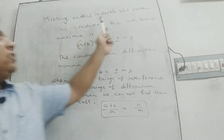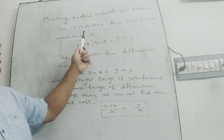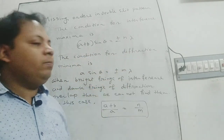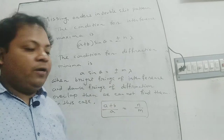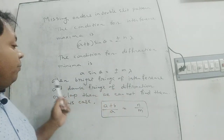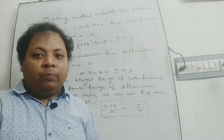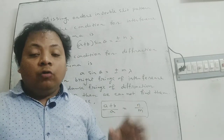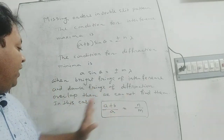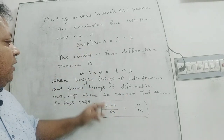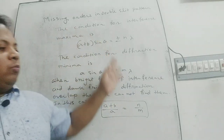Next, missing orders in the double slit pattern. When bright fringes of the interference pattern and dark fringes of the diffraction pattern overlap, those interference fringes are missing. In this case, (a+b)/a = n/m. This is the condition for missing orders in double slit patterns.